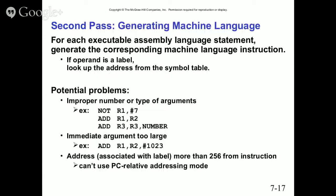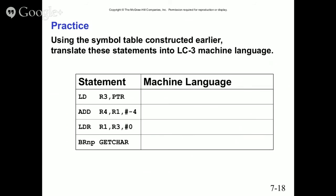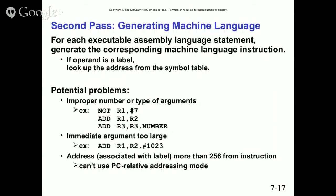The second pass generates the corresponding machine language instruction for each executable assembly statement. If the operand is a label, it looks up the address from the symbol table. Potential problems include an improper number or type of arguments, an immediate argument too large, or an address more than 256 from the instruction — the PC-relative addressing mode limitation. We'll be using NASM as our assembler.